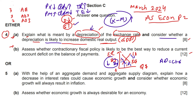When net exports (X minus M) increase, aggregate demand rises because X minus M is a major component of aggregate demand: AD = C + I + G + (X − M), where C is consumption, I is investment, G is government spending. If net exports increase, aggregate demand rises and the AD curve shifts right. As a result, real GDP increases and economic growth occurs in the country.